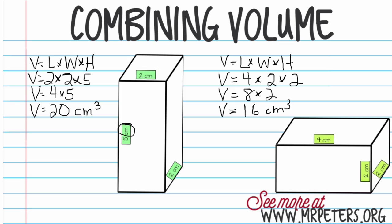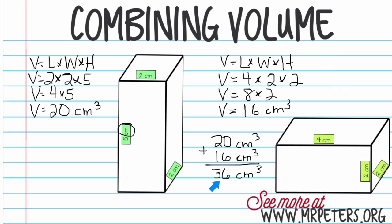We're not done yet, because to combine — and combine means to add — we want to add our two figures together. So we have twenty plus sixteen, both in centimeters cubed. Twenty plus sixteen is thirty-six centimeters cubed. That is how you combine volume: break up the solid into two separate smaller prisms, solve them separately, and add them together to get your answer.